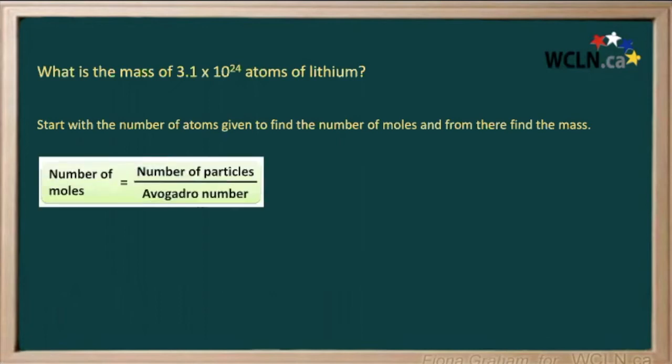Here's our formula for finding the number of moles. We just take the number of particles we have, 3.1 times 10 to the 24, and divide that by Avogadro's number, which is 6 times 10 to the 23. That gives us approximately 5.167 moles of lithium.